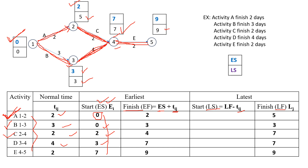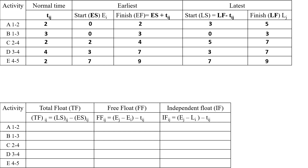Similarly, we calculate the latest start time using the formula: latest finish time minus activity time. For activity A: 5 minus 2 equals 3. For activity B: 3 minus 3 equals 0. For activity C: 7 minus 2 equals 5. For activity D: 7 minus 4 equals 3. For activity E: 9 minus 2 equals 7. After completing the earliest and latest time calculations, we draw another tabular column for total float, free float, and independent float.